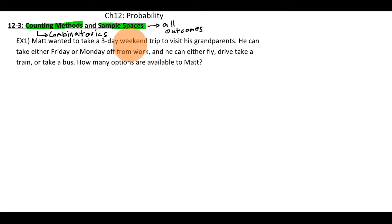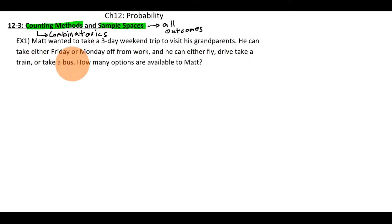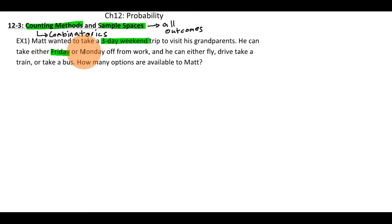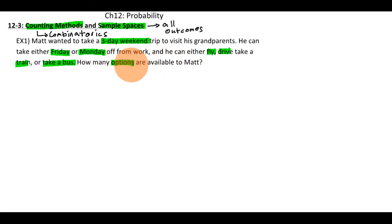Let's read through this first problem and see what we can do to solve it. Matt wanted to take a three-day weekend trip to visit his grandparents. He can take either Friday or Monday off from work, and he can either fly, drive, take a train, or take a bus. How many options are available to Matt? I'm going to highlight a few of the key important words in this problem.